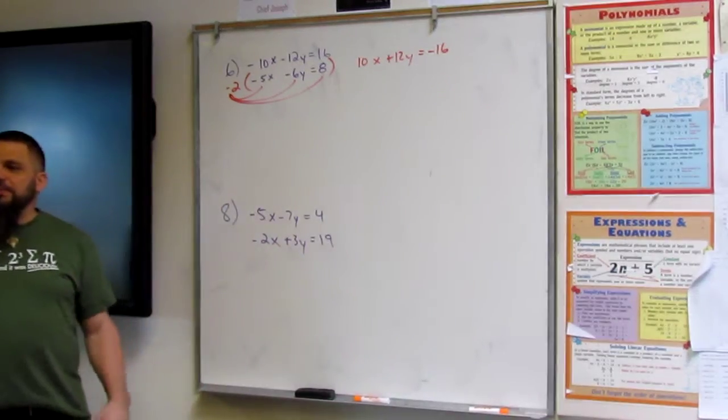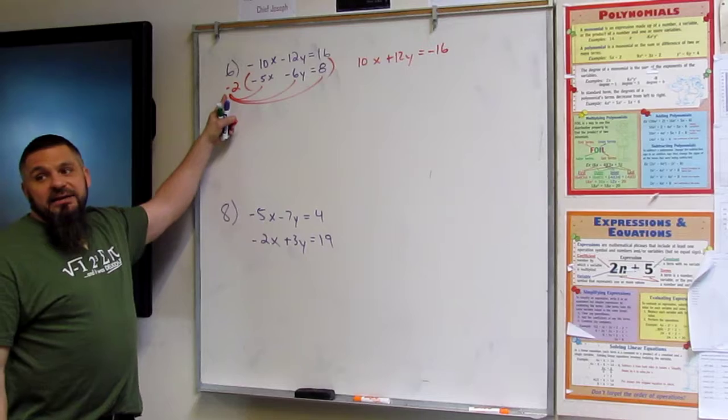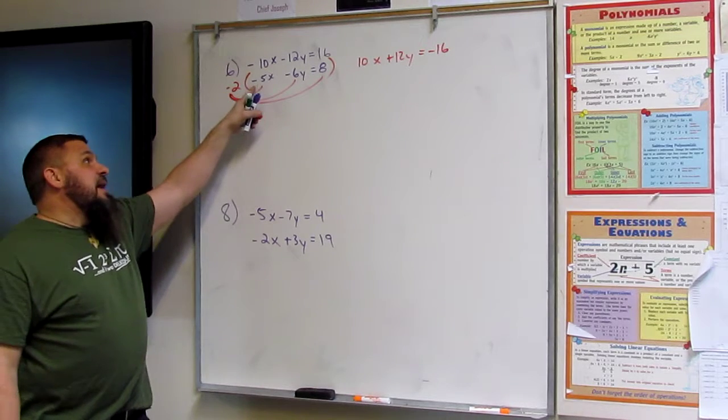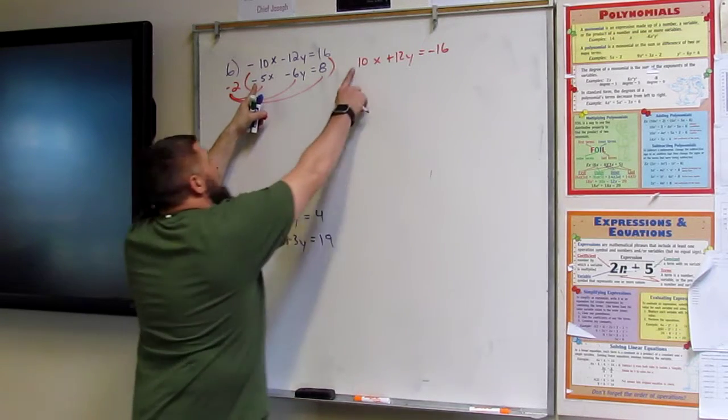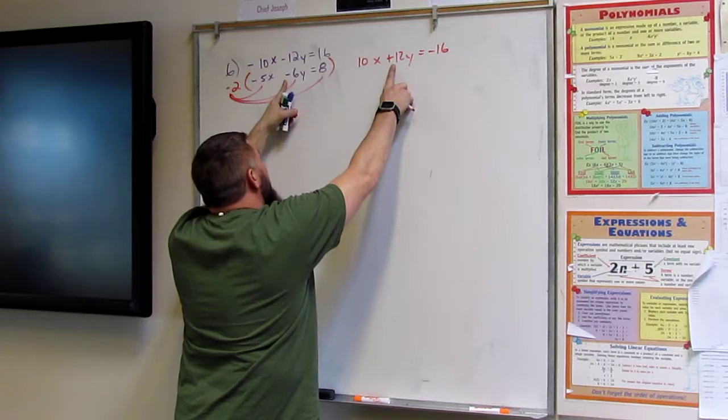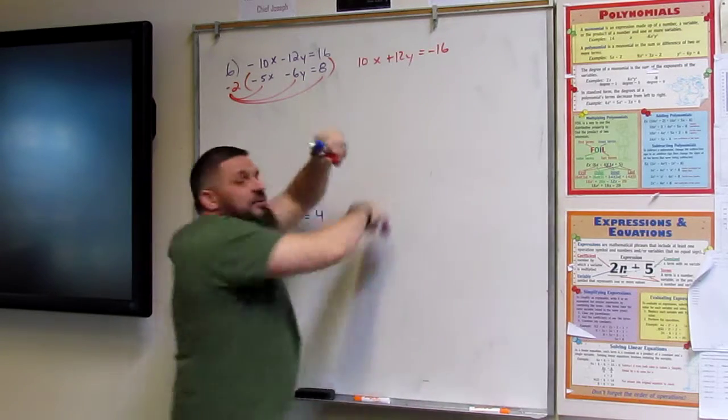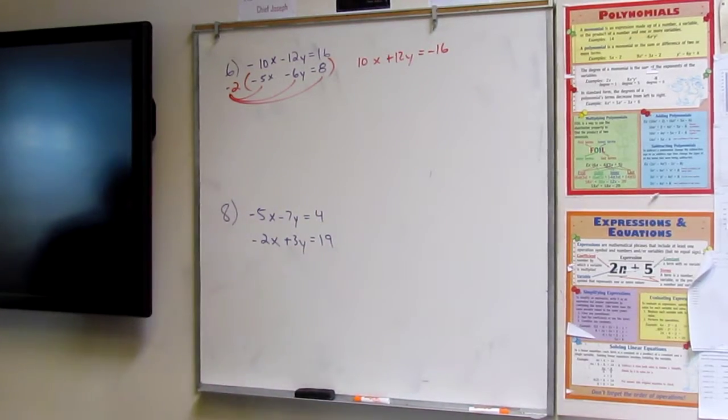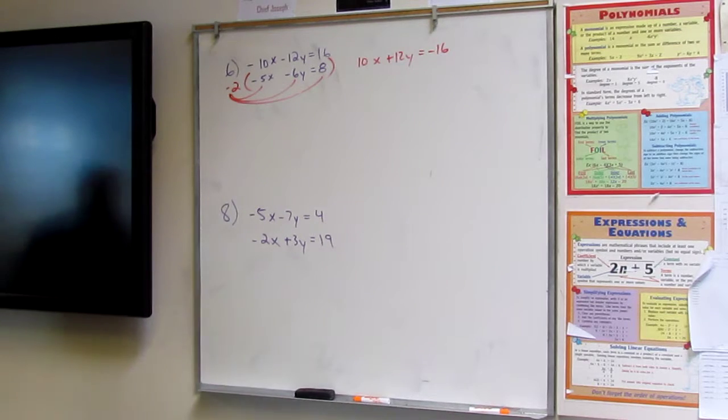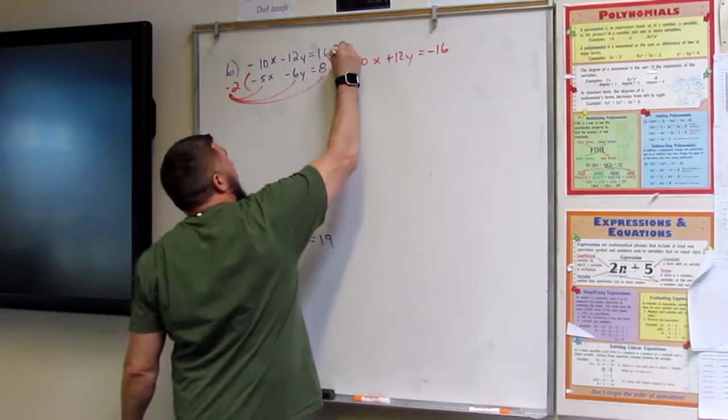So always double check. If I multiply by a negative, then that means that this sign should be positive, this sign should be positive, and this sign should be negative. Always opposites. Now all I do is move this over. Negative 10x, negative 12y, and 16.